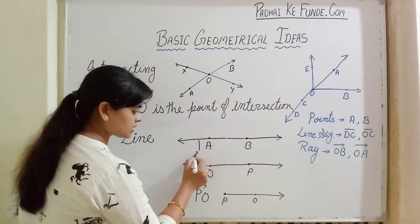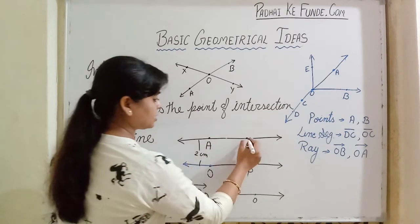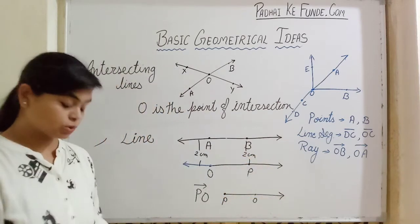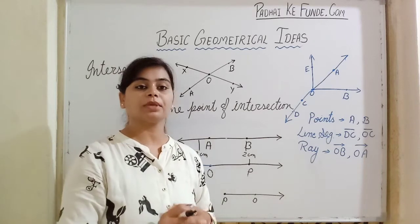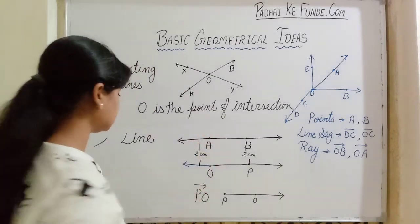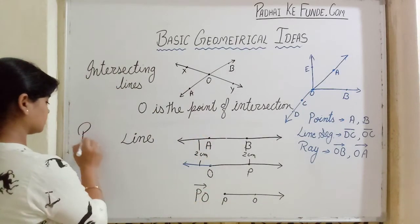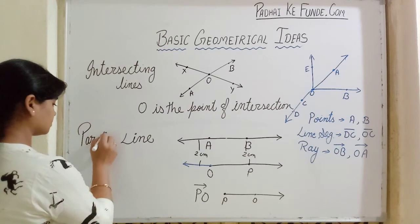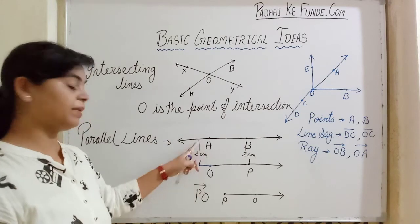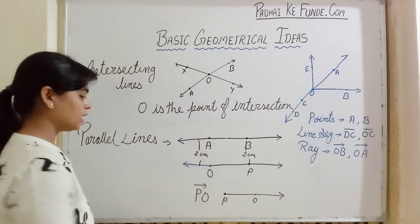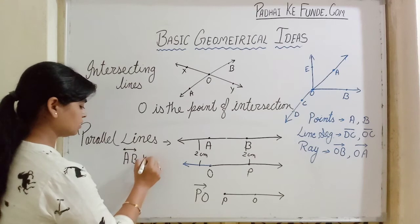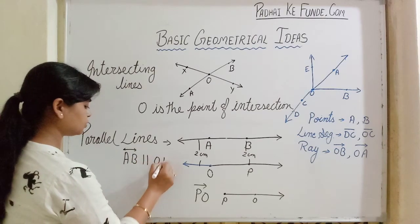That means they are at equal distance from any point. If we see here to here, suppose this distance is 2 cm. If we take any two points just opposite to each other, every time they will get the same distance only. So two lines which are equidistant from each other at every point, such lines are called parallel lines.